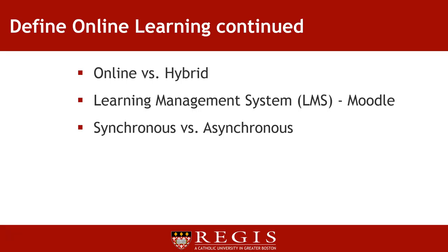Online learning activities may be synchronous or asynchronous. Synchronous activities would be at a scheduled time with students and/or faculty meeting in a live web conference or a chat room. Asynchronous activities do not have a scheduled meeting time, and the student would decide the time and place where they would access course content and complete assignments. There are still due dates for assignments, but students can choose when to complete the assignment before the due date. Regis College offers both online and hybrid courses. This course, Online Learning 101, is designed to help prepare students that are entirely taught online or hybrid at this college.